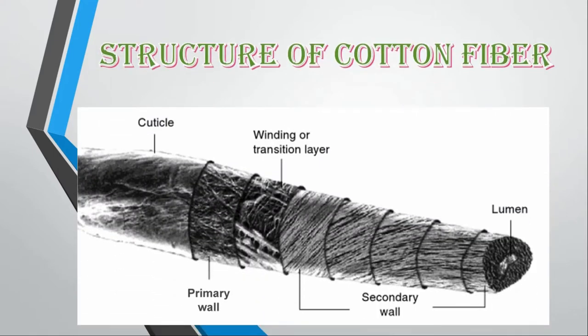Let's see some structural views of cotton fiber. The outer layer of cotton fiber is called the cuticle. Then there is a primary wall and secondary wall, and the inner part of the cotton fiber is called the lumen.